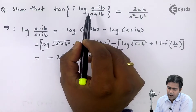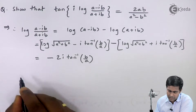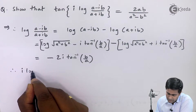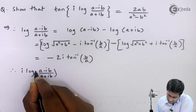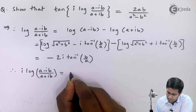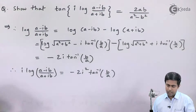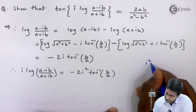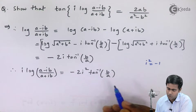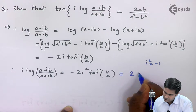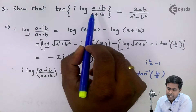Now we multiply both sides by i. The left-hand side becomes i·log((a - ib)/(a + ib)), and the right-hand side becomes -2i²·tan⁻¹(b/a). Since i² = -1, we have -2·(-1) = +2, so we get 2·tan⁻¹(b/a).